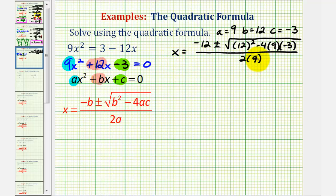Now we'll begin to simplify. We'll have x equals negative 12 plus or minus the square root. 12 squared is 144, and we have minus 4 times 9 times negative 3. That'll be minus negative 108, or plus 108, divided by two times 9, which is 18.